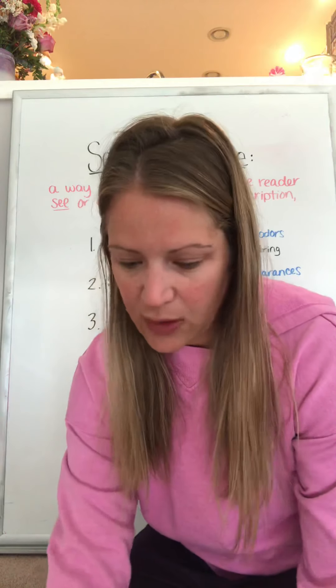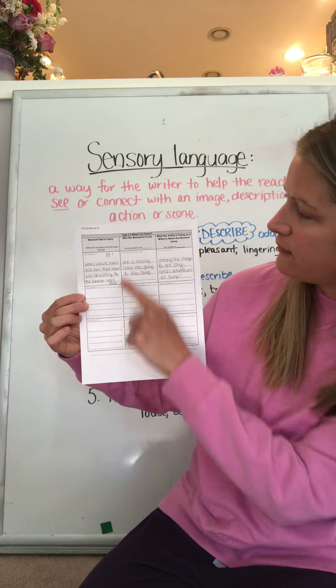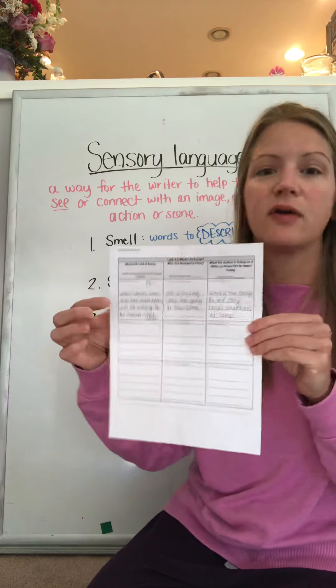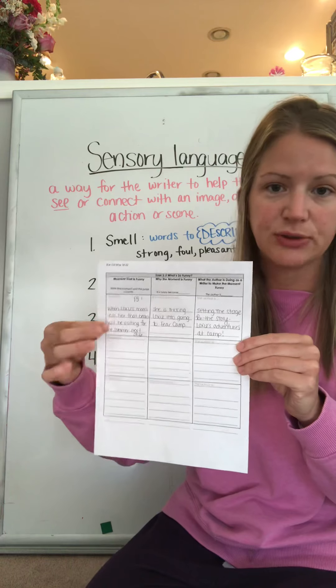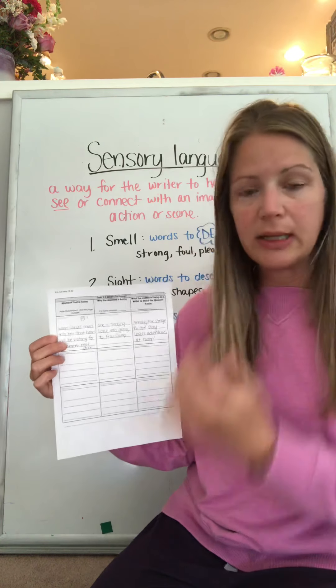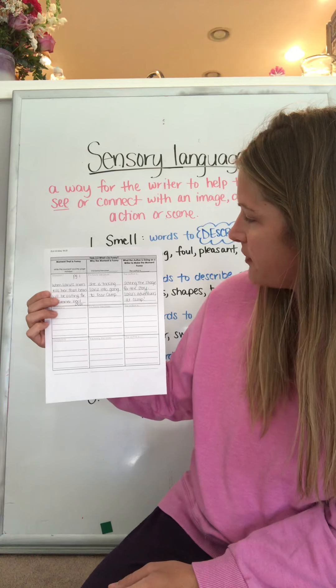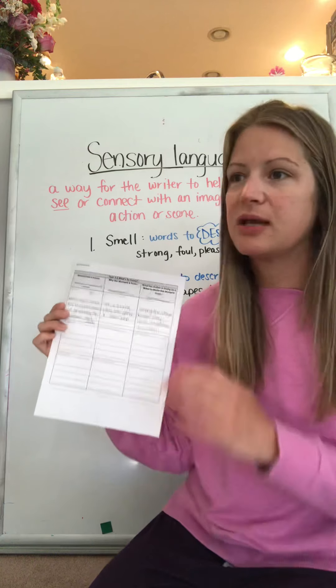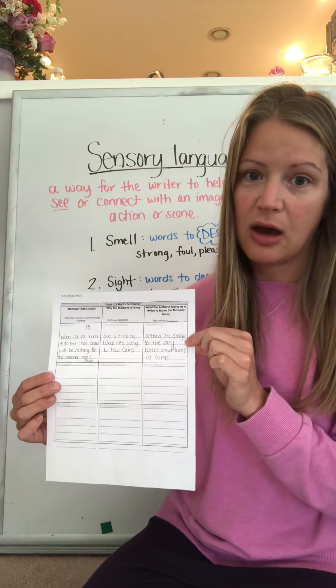Moving on to our graphic organizer — What's So Funny. The first column says find a moment that is funny, write it down and write the page number. You can use an exact quote from the story or you can just describe the scene that you found funny. In the second column, it is funny because — why did you find this particular moment in the story funny? And then the last column is what the author is doing as a writer to make the moment funny. The author has put this moment in the story for a reason — why do you think the author added this bit of humor, and why is it important to the rest of the story? You can include the sensory language factor in this column if you wanted to, because that would be the device or tool that the author was using.